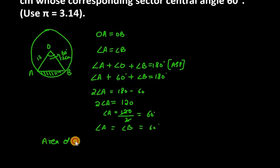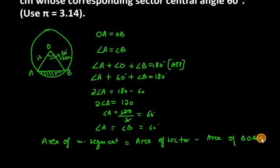So area of segment is equal to area of sector minus area of triangle OAB. So area of sector is theta over 360 into pi R squared. Then area of triangle OAB is equal to root 3 over 4 times side squared.